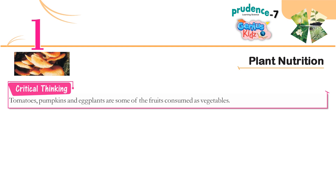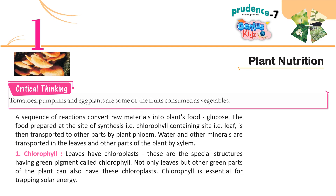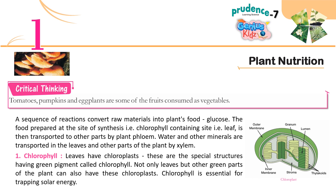Tomatoes, pumpkins and eggplants are some of the fruits consumed as vegetables. A sequence of reactions converts raw materials into the plant's food, glucose. The food prepared at the site of synthesis — i.e., the chlorophyll-containing site, the leaf — is then transported to other parts of the plant. Water and other minerals are transported to the leaves and other parts of the plant by xylem.